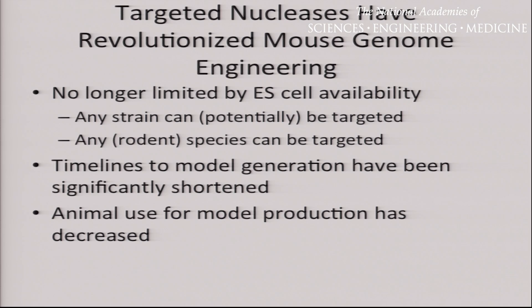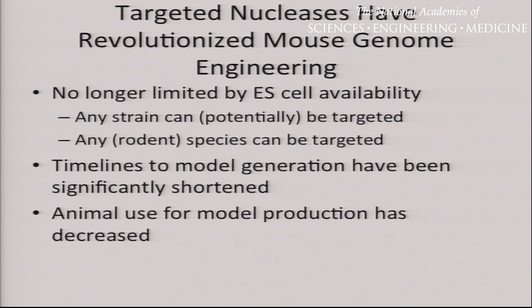In summary, the targeted nucleases have really revolutionized mouse, rat, and everything genome engineering. We're no longer limited by ES cell availability. We don't need to worry about making embryonic stem cells from the strain or even the species that you want — you can do any rodent species or any species. The timelines to model generation have been significantly shortened. Animal use for model production decreases through our ability to make animals quicker, faster, and cheaper — reducing the money that could otherwise be spent more productively for basic research.